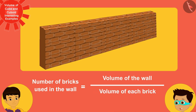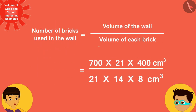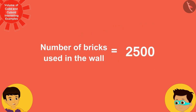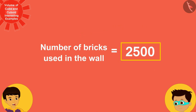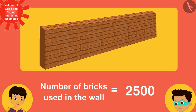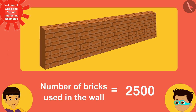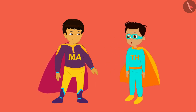Well done, Manas! Now to find the number of bricks in the wall, we only have to divide the volume of the wall by the volume of each brick. On solving this, we can see that 2500 bricks have been used in the wall. This was done very quickly and easily, instead of wasting a lot of time counting each brick!